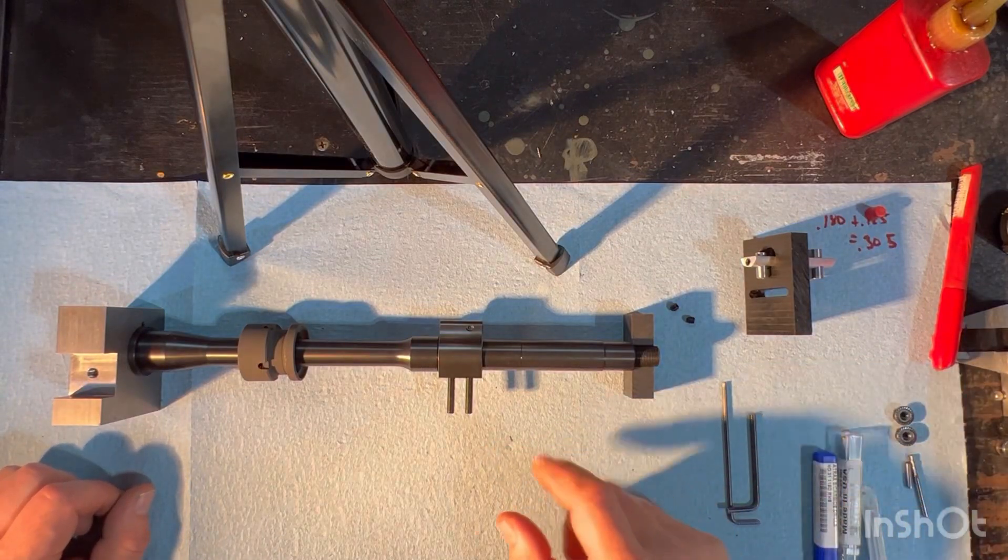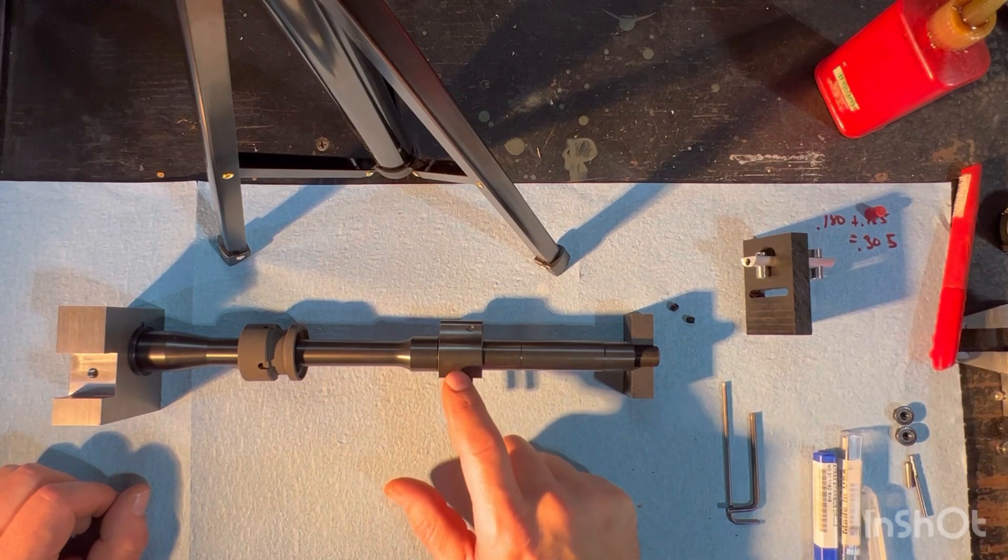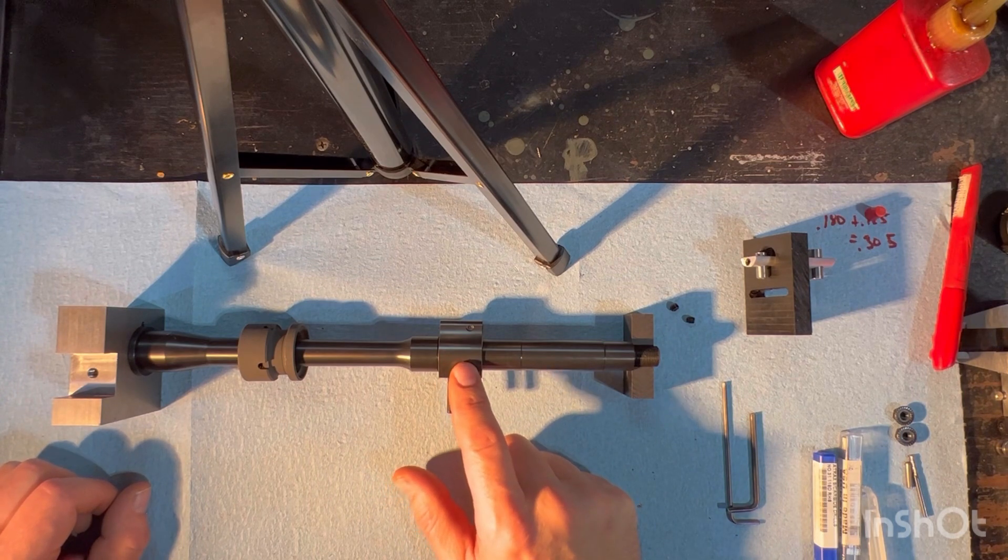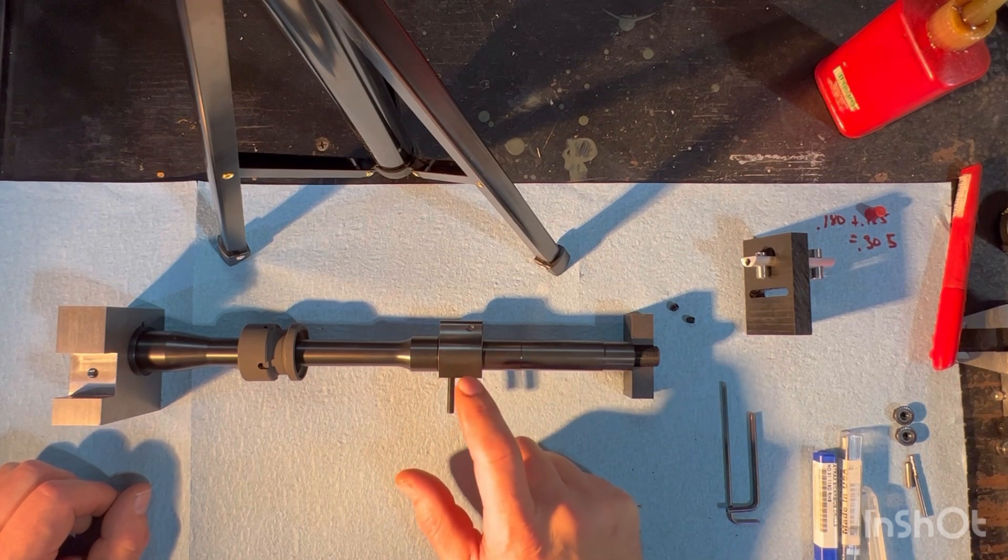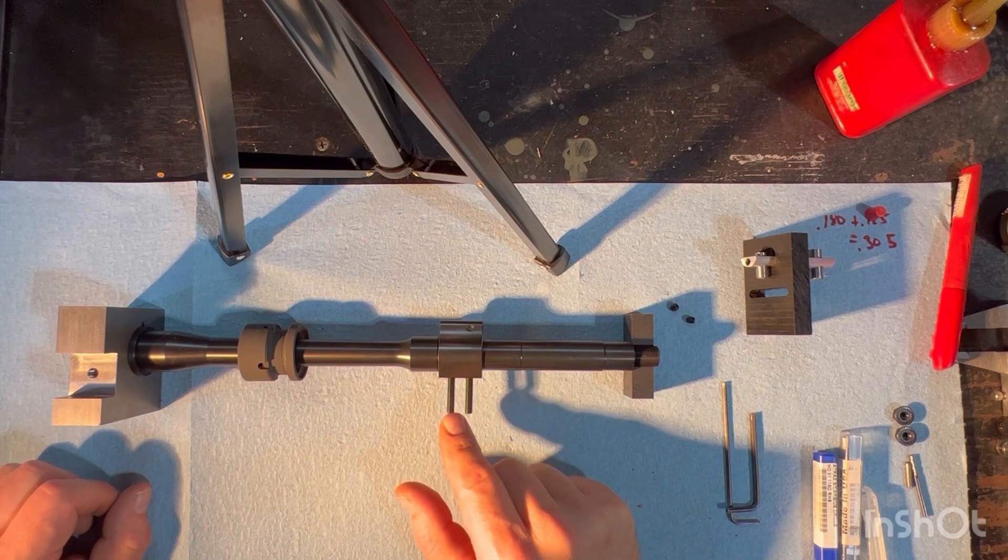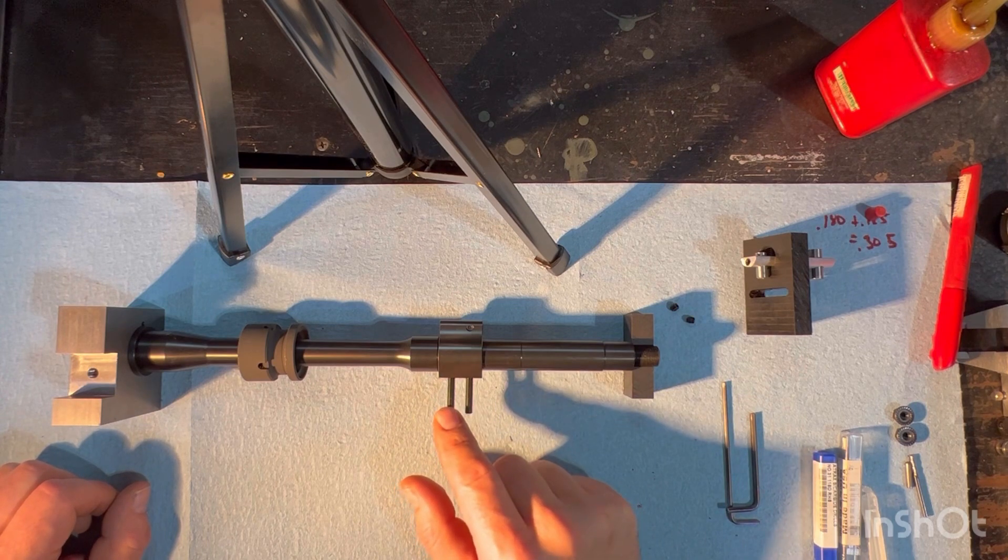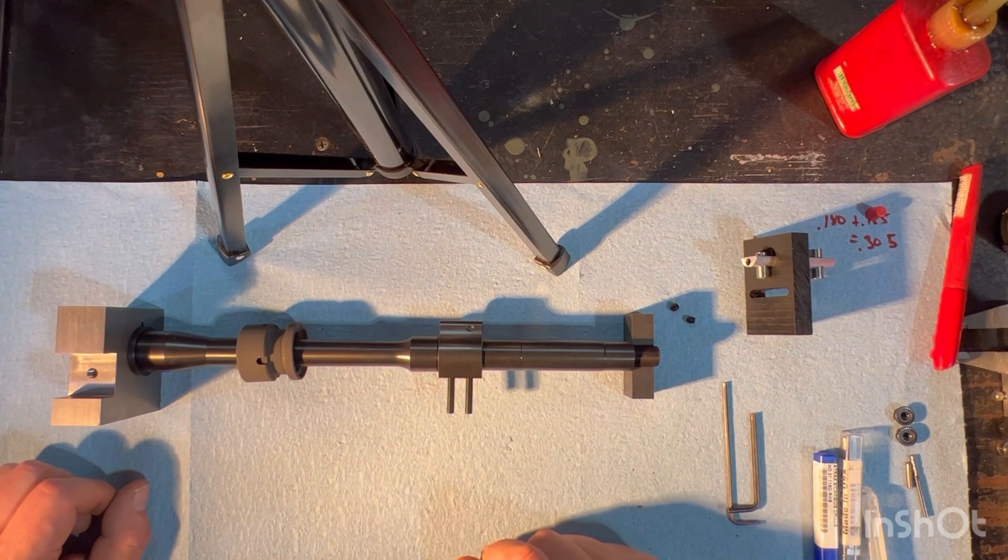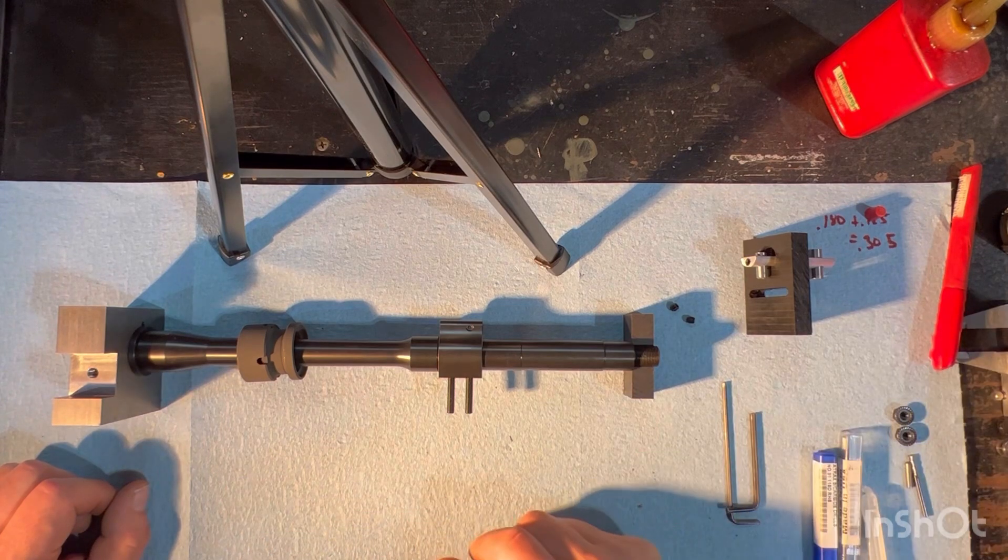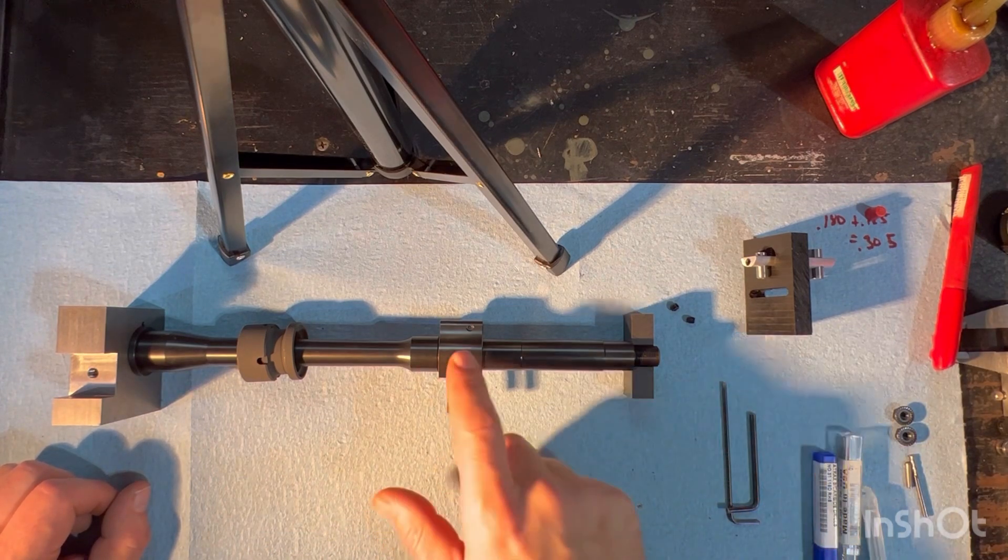Okay, so I'm set up here. What it is, I got the gas block installed using the dimples to time it. I've got these long one inch 10-32 set screws installed through the barrel nut. So once I go to put the upper together, I'm ready to go. I don't necessarily have to pull this block back off once it's pinned.